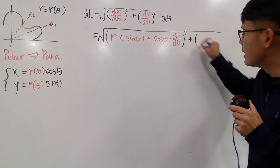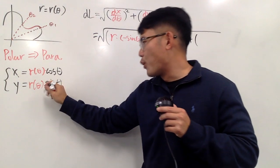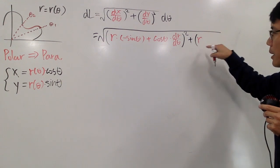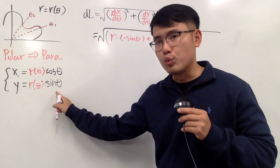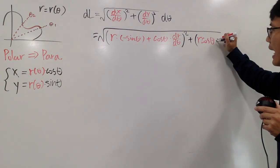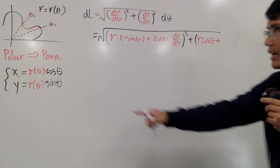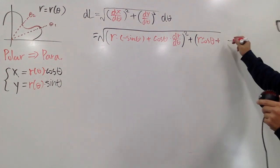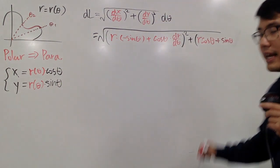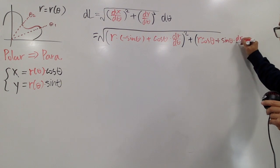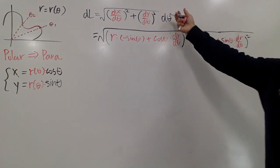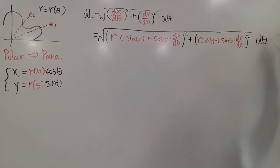We add dy/dθ, which also uses the product rule. Keep the first function R, and the derivative of sine theta is cosine theta. Then add the second function sine theta multiplied by the derivative of the first, dR/dθ. We square that entire expression as well, and we have the dθ on the outside.